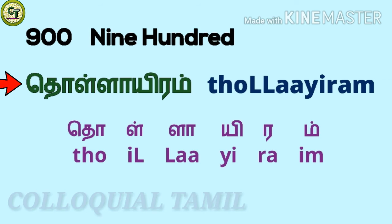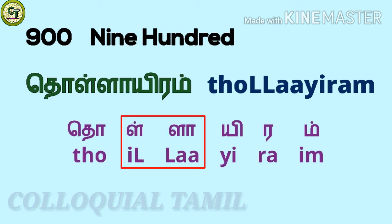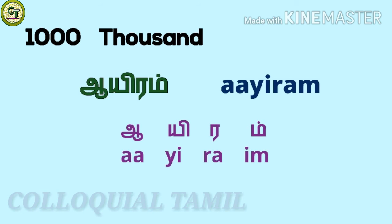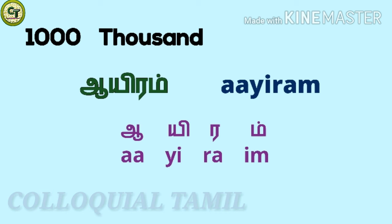For 900: tolla iru noo ru. Ill is a consonant, laa is a long sound letter — both the ill and laa belong to the group of big laa letters. While pronouncing it, your tip of the tongue touches the middle roof of your mouth. Then e, ra, and im together make tolla iru. For 1000: iru. You may have noticed the similarity between 900 and 1000 — for 900: tolla iru, for 1000: iru.